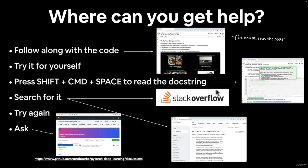If you need the doc string to read about what a function does, you can press Shift+Command+Space in Google Colab, or Control if you're on Windows. If you're still stuck, you can search for the code you're running — you might come across Stack Overflow or the PyTorch documentation, which we've been referencing a lot.